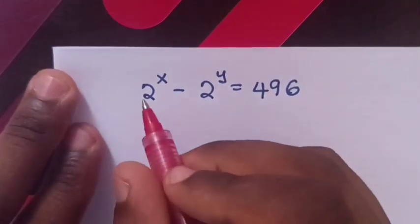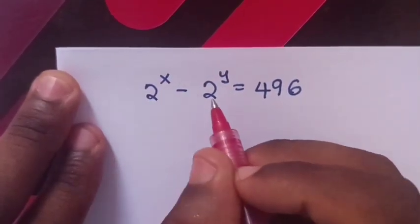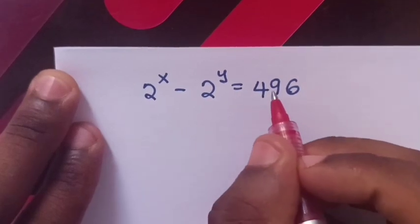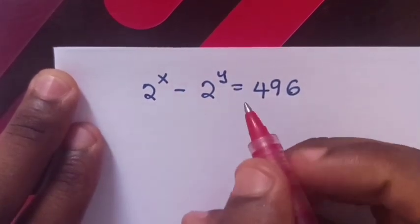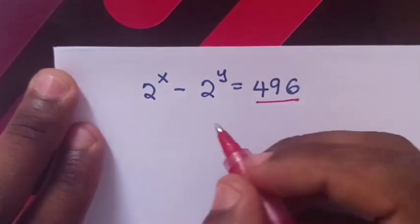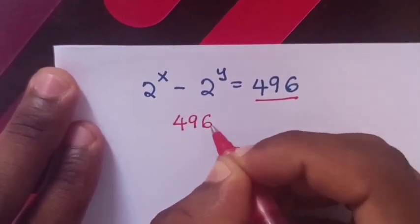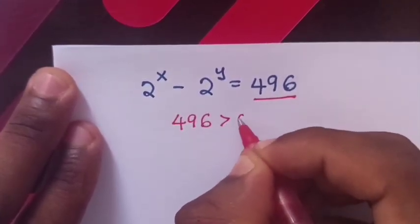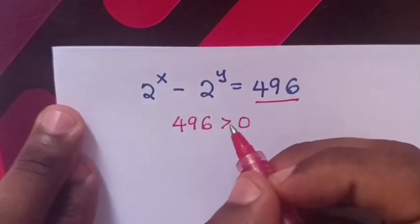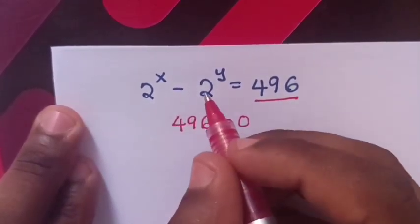Hello, to solve 2 power x minus 2 power y equals 496, find the value of x and y. From 496 being greater than 0, it means